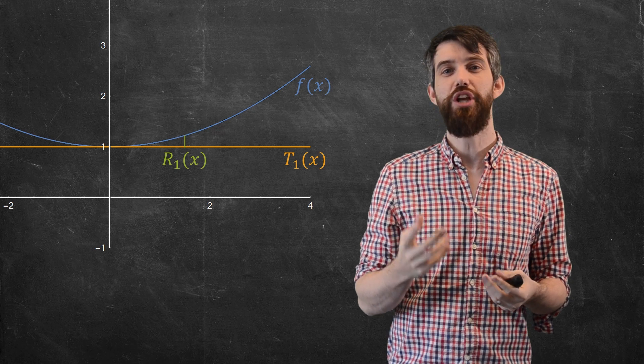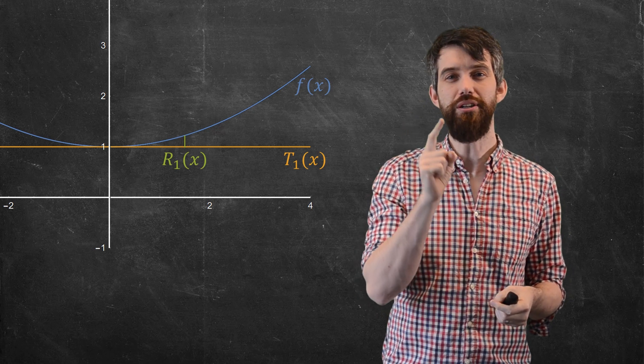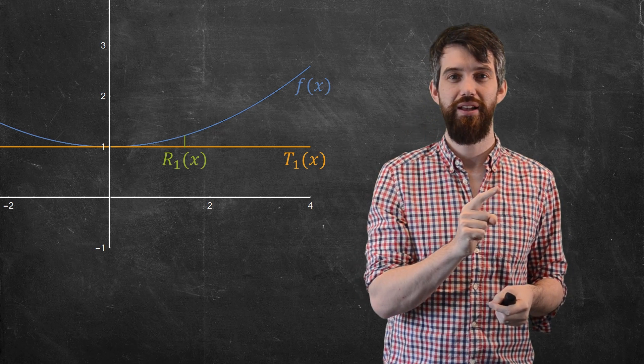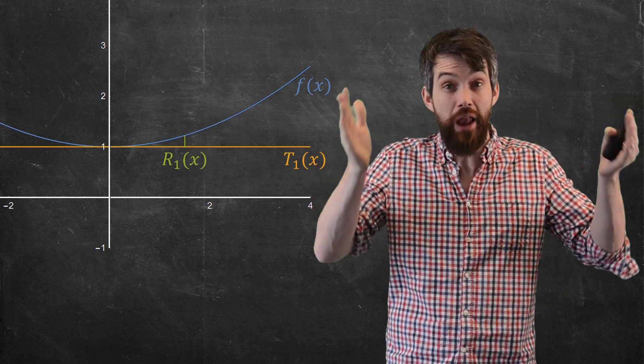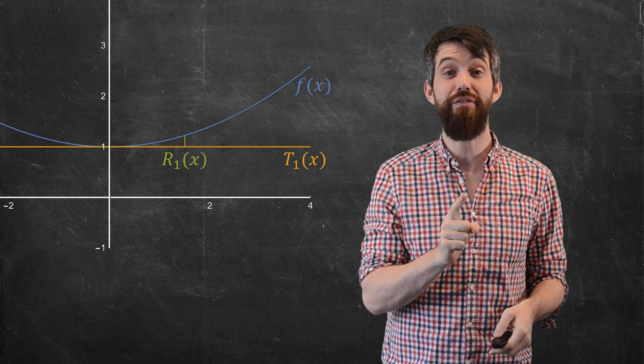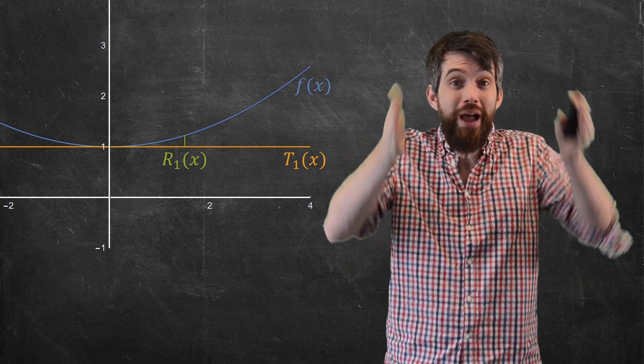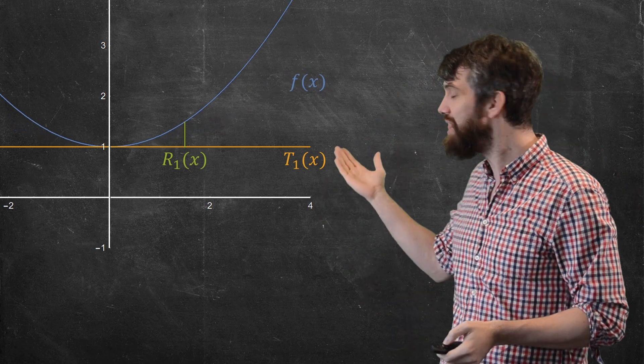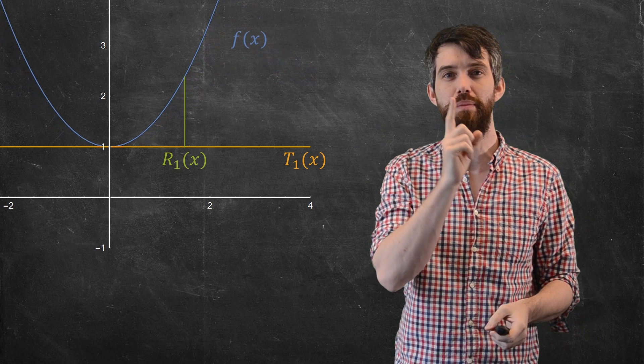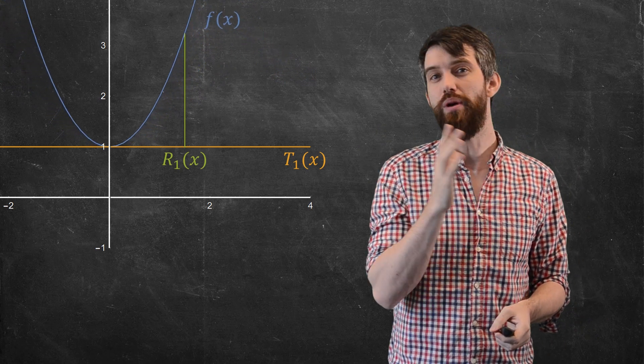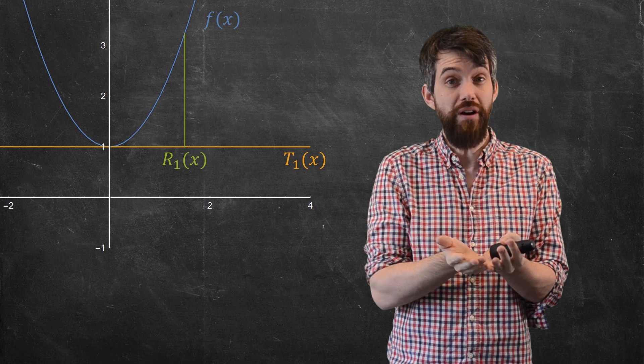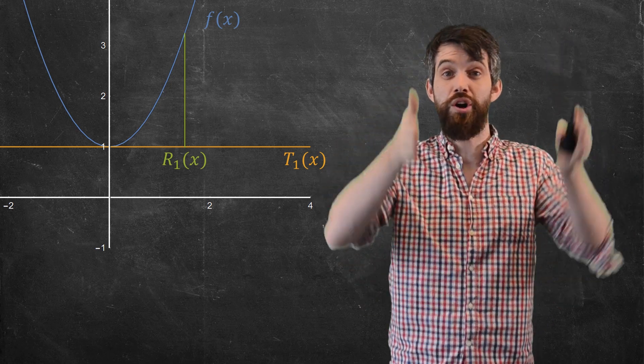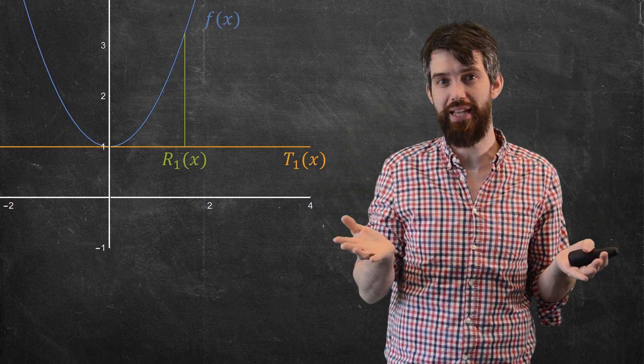But what if I changed the curvature of the function itself? As in, my f of x is a concave up function, but a fairly shallow one right now. Watch what happens if I make my f of x a sort of more aggressively concave one. As in, I take this and I transform it. Now watch the remainder as this moves. The remainder gets bigger and bigger and bigger when my function gets sort of more and more curvy and less shallow in a sense.